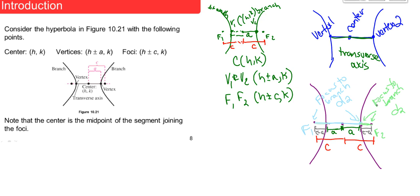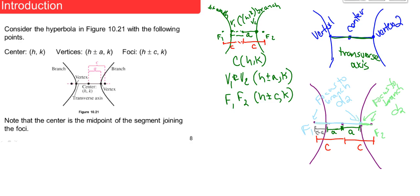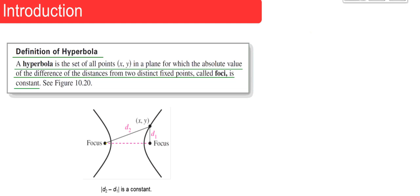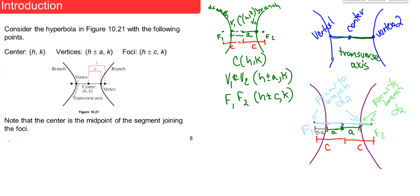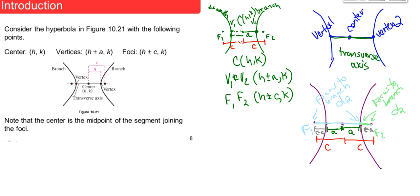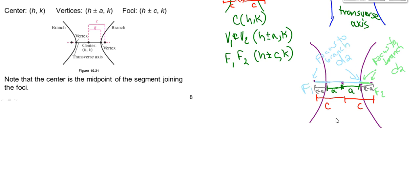No matter where we are on the hyperbola, if we take the absolute value of D2 minus D1, we always get the same constant value. The specific point we're choosing here happens to be a vertex. So the absolute value of the difference of distances from the foci to the branch equals |D2 - D1|, which we've shown equals 2A. This confirms the length of the transverse axis is 2A.